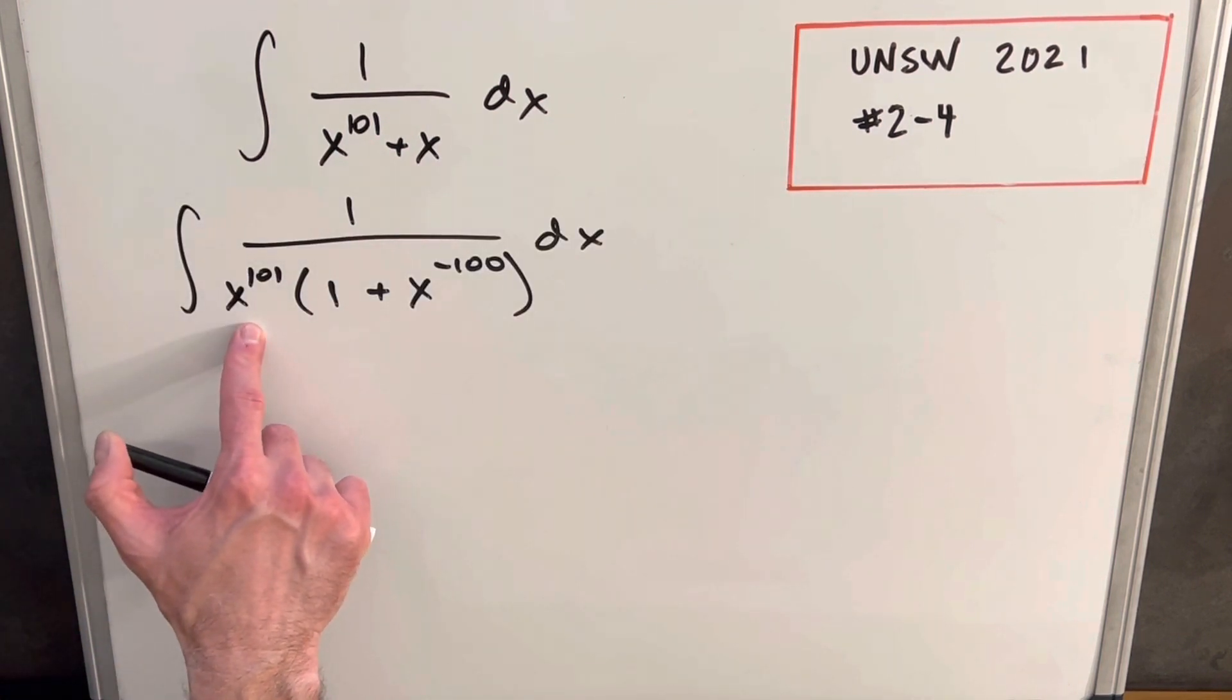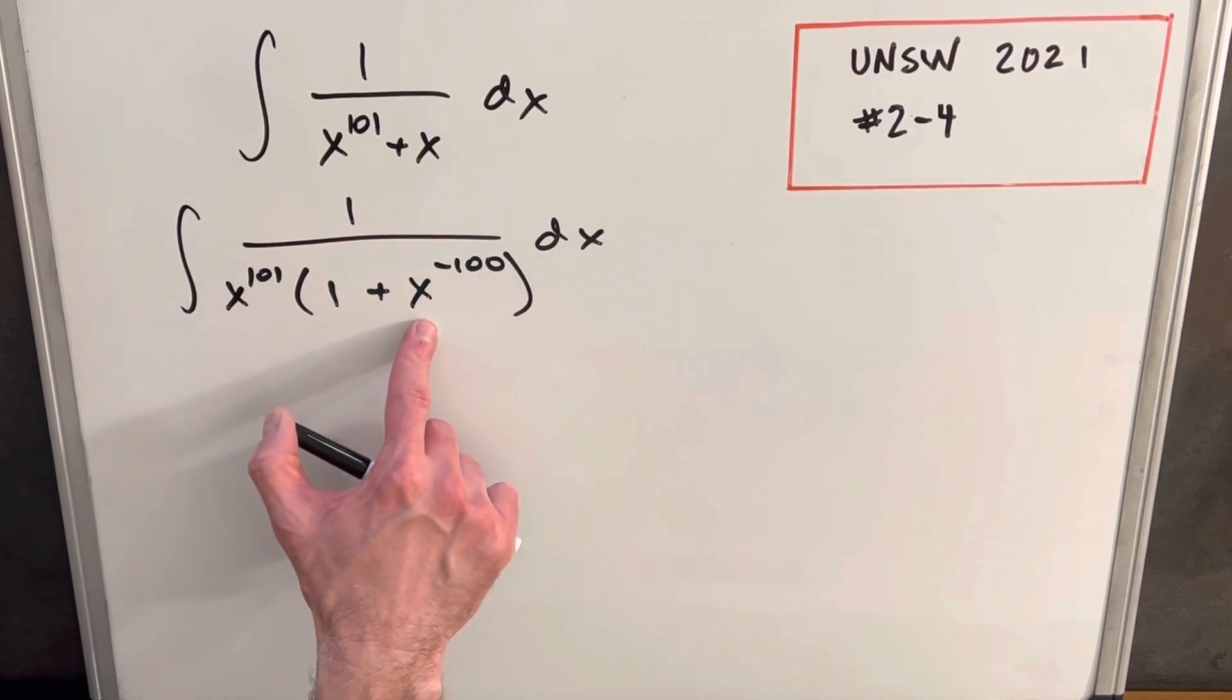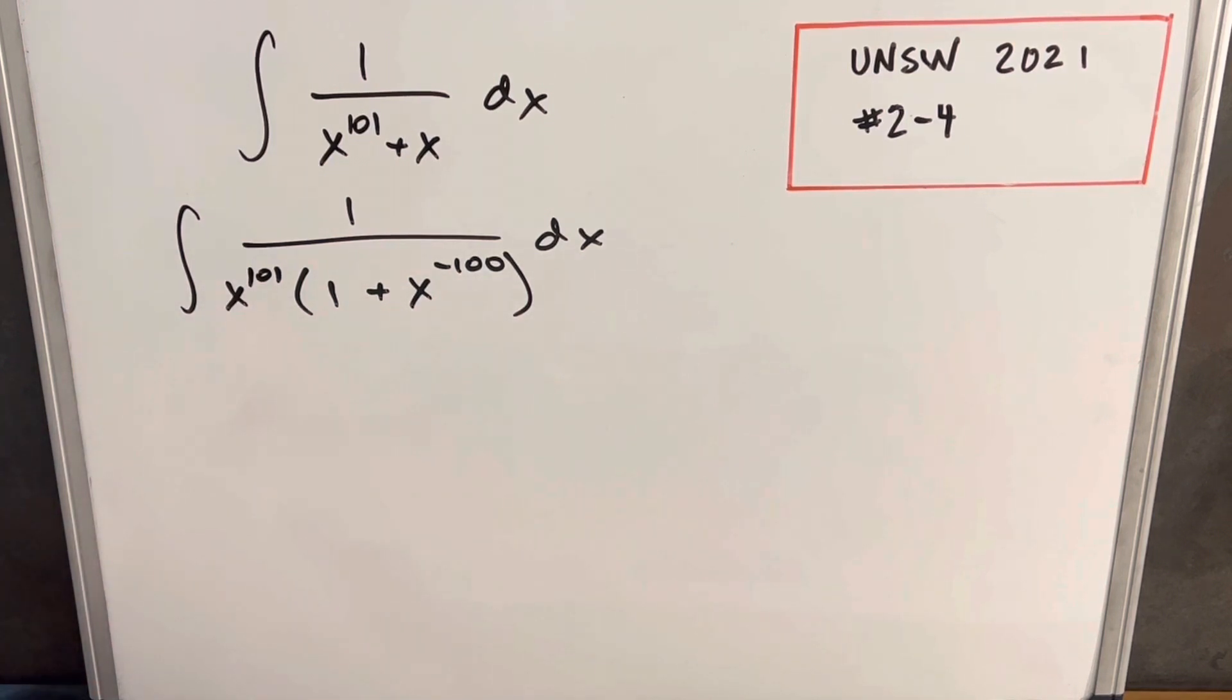Factoring out the x to the 101 here, we get one and you notice we have x to the minus 100. And then what I want to do is bring this into the numerator and then try to do a u substitution.